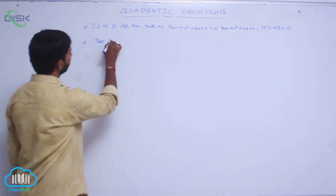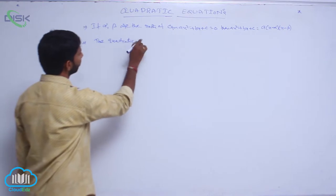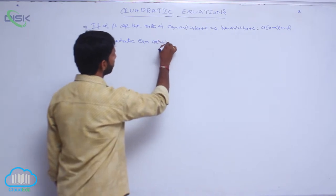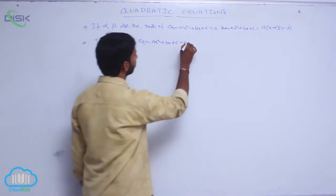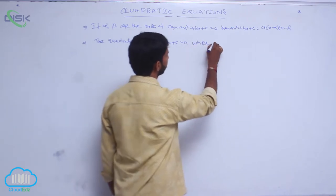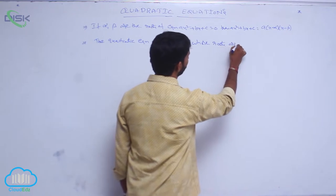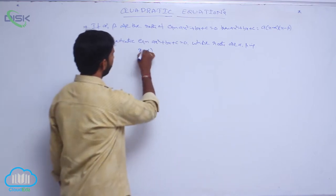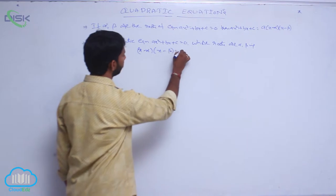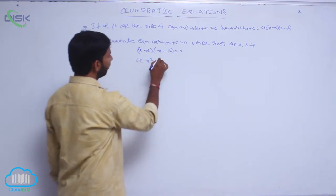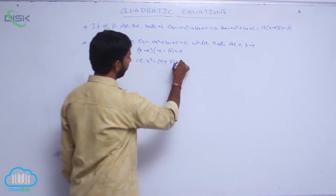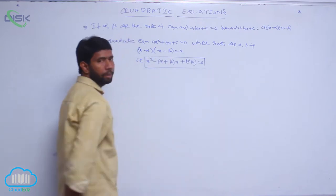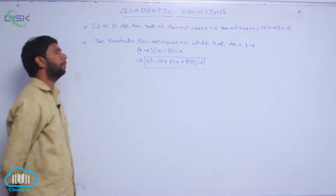The quadratic equation Ax² + Bx + C = 0 whose roots are alpha, beta is: (x − alpha)(x − beta) = 0, that is x² − (alpha + beta)x + alpha·beta = 0.